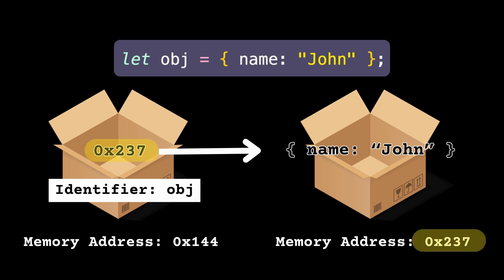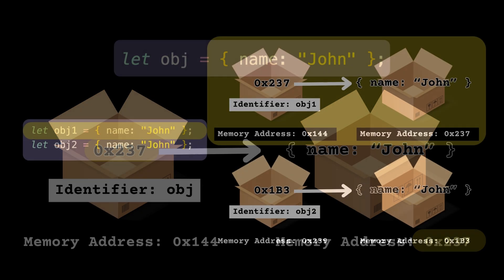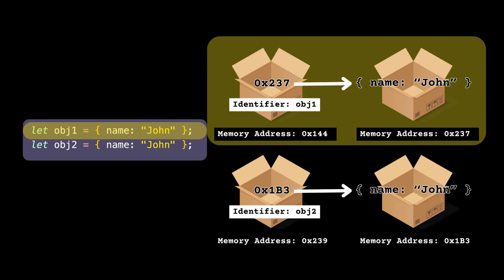Then the variable obj is also created in memory, and instead of storing the value of the object directly, it stores a reference — the memory address of the actual value. This means obj will not store the name 'john' directly; instead, it will store a memory address pointing to the actual object value.